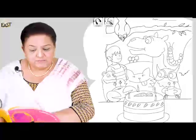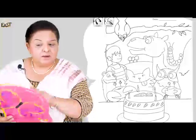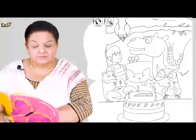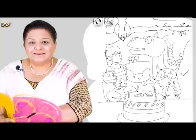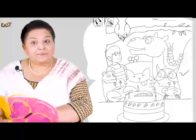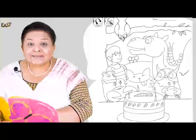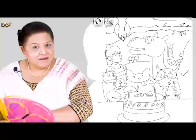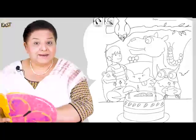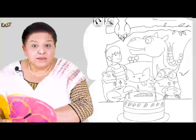Lekin yeh picture mein kitni cheezein hain — phir se dekhen: crow, camel, caterpillar, crab, cub, cat, cake. Aur yeh konsa cake hai? Carrot cake — carrot cake with candles.